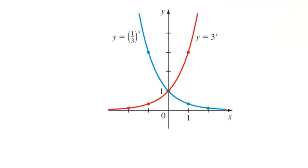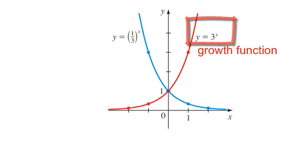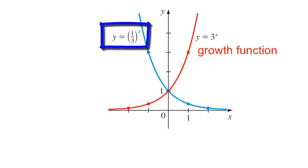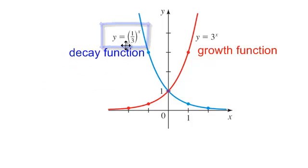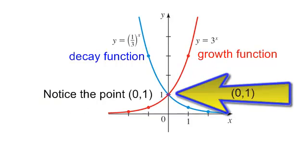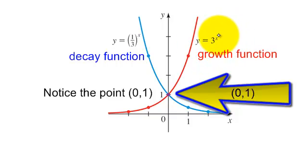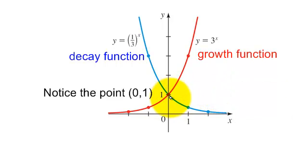So these are two examples of an exponential graph. We have y equals 3 to the x — this is known as a growth function, and you see it grows very, very quickly. We also have y equals 1 third to the x, which is a decay function. When the base is a fraction, the graph is decreasing. Notice the point (0, 1): in an exponential function the variable is in the exponent, so plugging in 0 gives anything to the 0 power equals 1. Before any shifts take place, all of these functions will go through the point (0, 1).